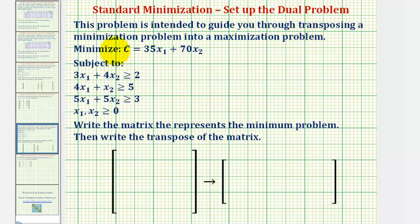First, notice how the given minimization problem is standard because the variables are non-negative and all the constraints are in the form of being greater than or equal to a non-negative value. So we first want to form a matrix using the coefficients of these first three constraints and our objective function without using slack variables.